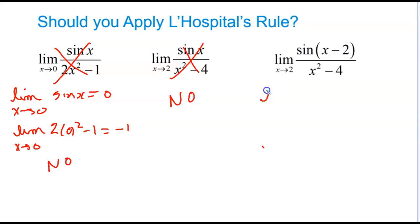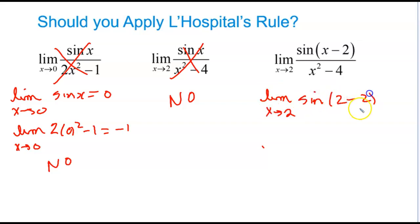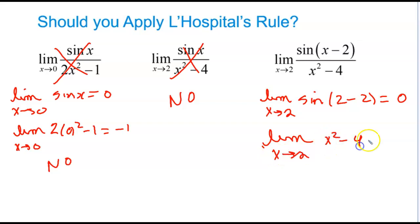In this example, the limit as x approaches 2 of the numerator is sine(2 minus 2), which is sine(0), which is 0. And the limit as x approaches 2 of x squared minus 4 also equals 0. So yes, this is of the indeterminate form 0 over 0, so L'Hôpital's rule will apply.